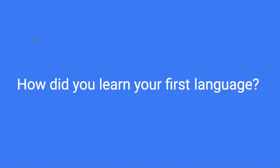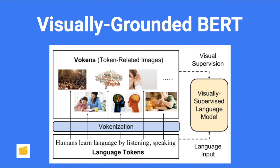Do you remember how you learned your first language? Did you learn that by reading a lot of books, or did you learn it other ways? Today we are going to discuss what's the better way to train the model to learn languages. This paper proposes a very interesting method — they train the BERT model to learn languages by not only reading text, but also getting image information, visual information. We call this visually grounded BERT, visually grounded supervision.